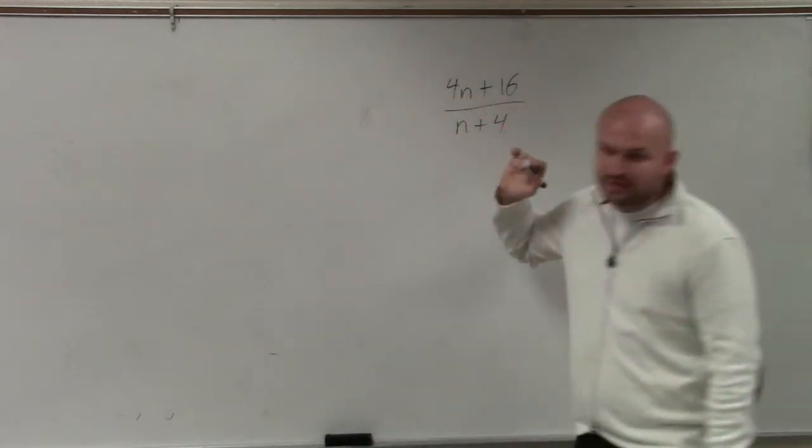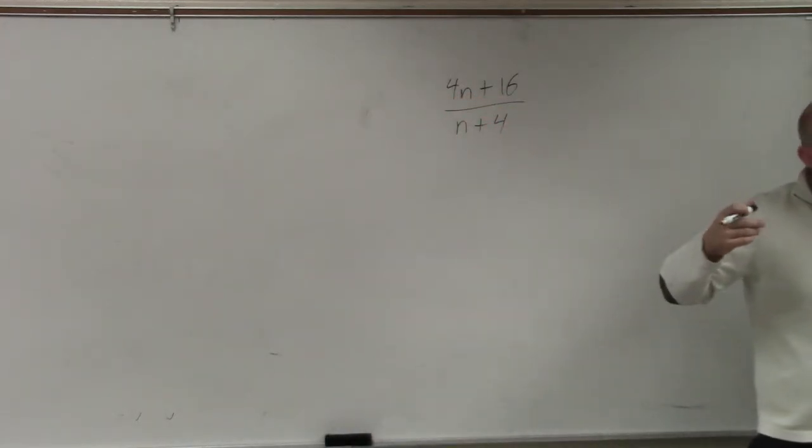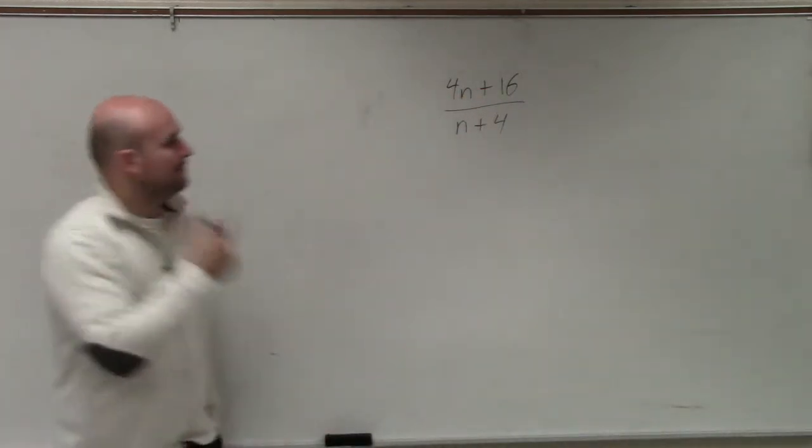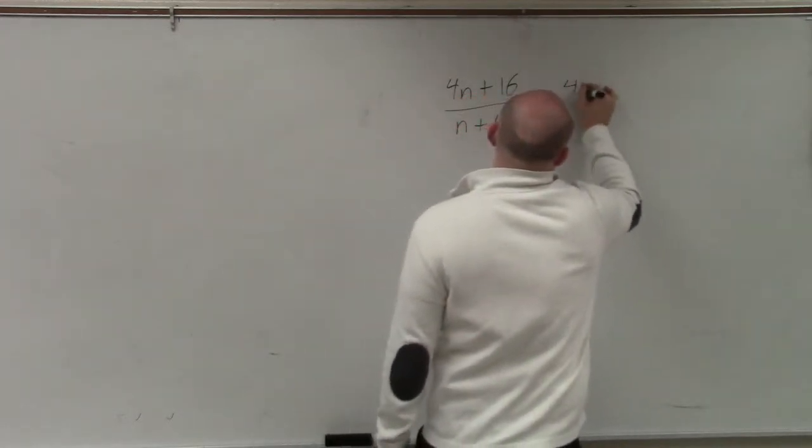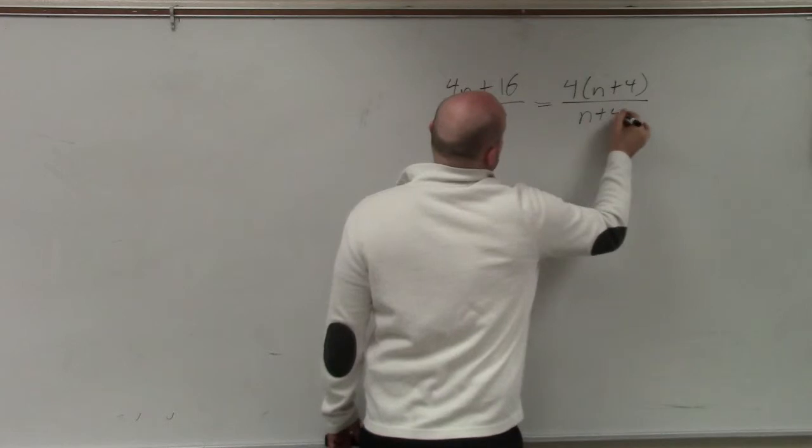So we look at our numerator and say, how can we factor 4n plus 16? First thing we always want to do is see if we can factor out a GCF. Is there a common factor we can factor out of 4n and 16? 4. So therefore, I factor this to 4 times (n plus 4) divided by (n plus 4).